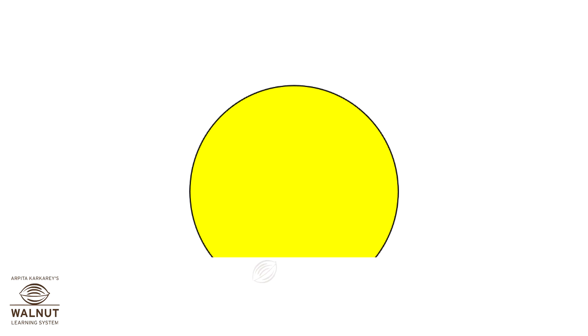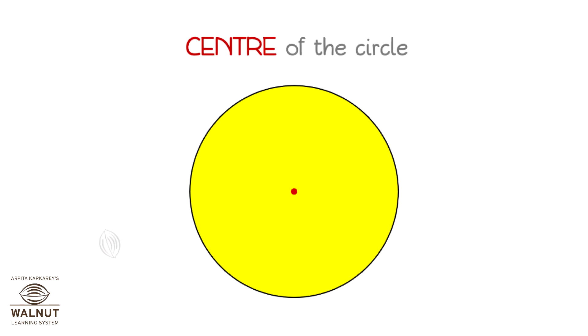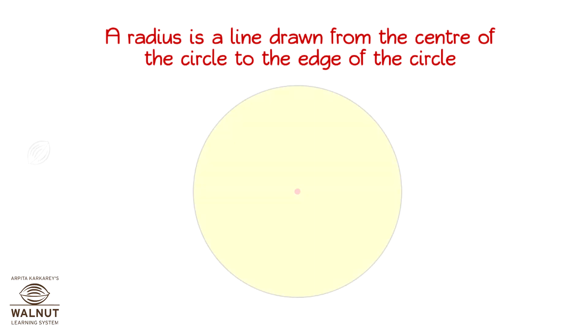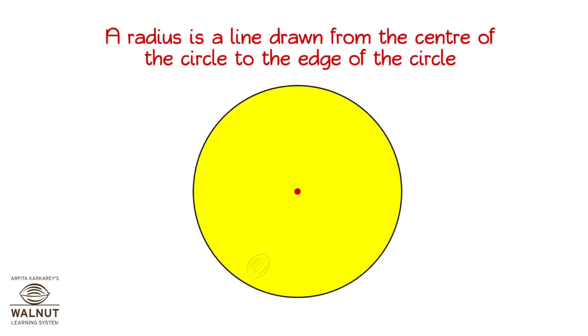Let us now take a look at the parts of a circle. Every circle has a center. Do you remember where you kept the compass point when you drew the circle? From the center of the circle, draw a line out to the circle. That is the radius. The radius can go in any direction. A radius is a line drawn from the center of the circle to the edge of the circle.